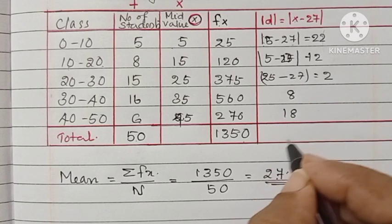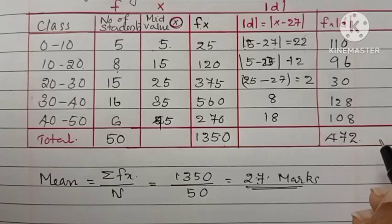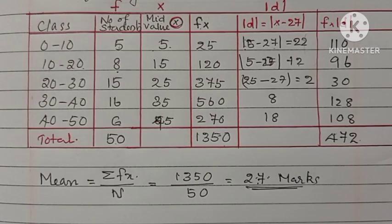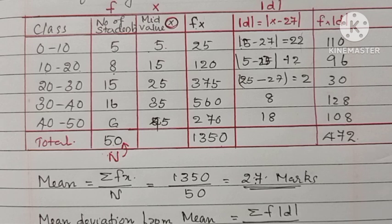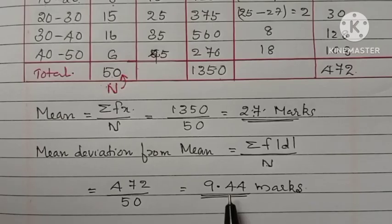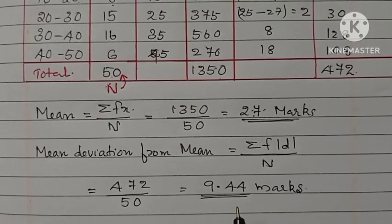After that, we have to multiply frequency and modulus d and find the sum of that answer. That will be 472. Now, mean deviation from mean is equal to sigma fd by n. Therefore, sigma fd is equal to 472 divided by 50. The answer is 9.44 marks.